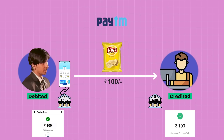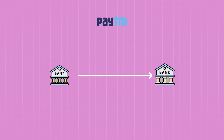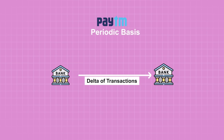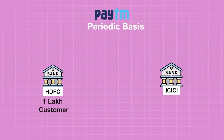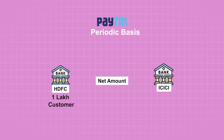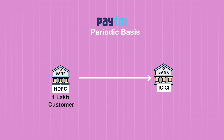But in reality, this money has not actually been received by the receiver's account. The way the back-end system functions is that instead of immediately transferring 100 rupees every time someone sends money, what these banks do is settle the delta of transactions on a periodic basis. For example, if 1 lakh HDFC customers sent 250 crores to ICICI merchants and ICICI customers sent 100 crores to HDFC merchants, instead of updating every single transaction, they wait till the end of the day and transfer the net amount. In this case, HDFC will simply send 150 crores to settle the transaction with ICICI.